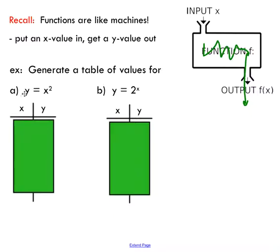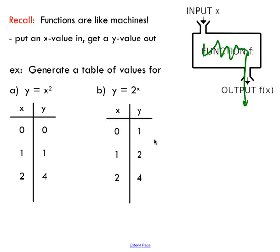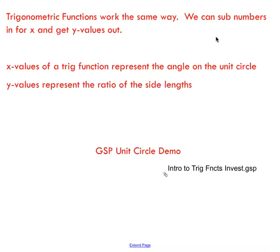We've seen this when we looked at parabolas and exponential functions. You can pick x values and substitute them into your function. In this case, your x value gets squared, and then a y value gets spit out. Just like the same thing for exponential functions. If you pick x values and substitute them in, you get y values spit out. Well, trig functions work the exact same way. You can substitute numbers in for x, and you get y values out.